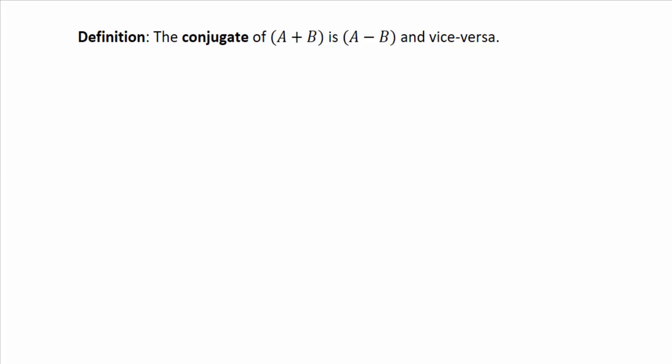The big definition is the conjugate of the quantity a plus b is a minus b, but it works both ways. The conjugate of a minus b is a plus b. So instead of writing all that, I just put vice versa. So these guys are conjugates of each other.